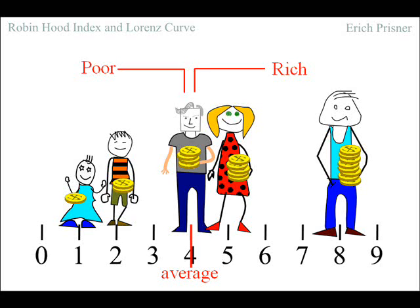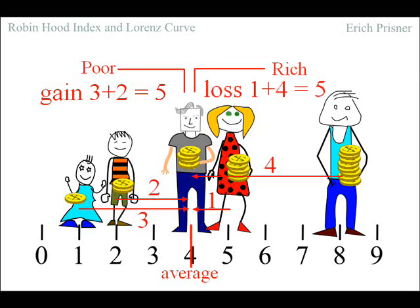Obviously Robin Hood transfers money from rich to poor. Anne gets 3 coins and Bob gets 2. So the poor get 5 coins together. Cindy gives 1 coin and Doug gives 4. So the rich together give 5 coins. Of course, what the rich together give is the same what the poor together get.